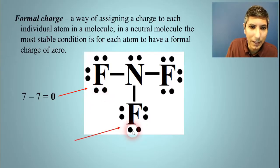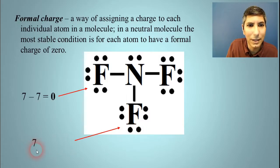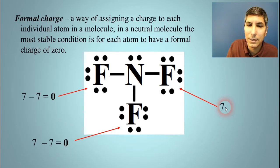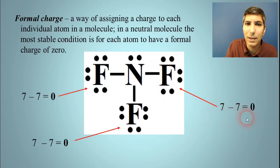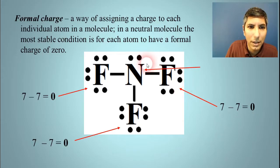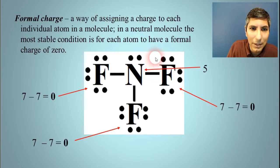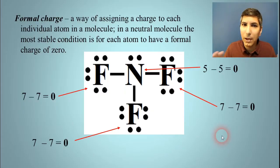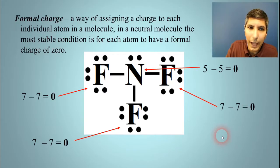Counting for this fluorine: one, two, three, four, five, six, and that bond counts as seven. So seven minus seven — the formal charge on the fluorine is zero. This is a neutral molecule, not an ion, so zero is a good thing; you want all of these to be zero. The other fluorines similarly each bring in seven and have seven assigned — seven minus seven is zero. The nitrogen brings in five dots, and it has one, two, three, four, five assigned to it — also zero. Every bond counts for one, every dot counts for one. So everything in this molecule is zero, which tells us this is most likely the actual structure for the molecule. Formal charge helps us confirm that.